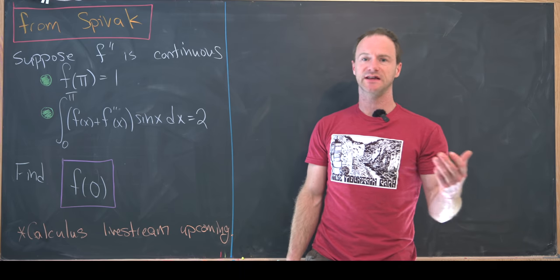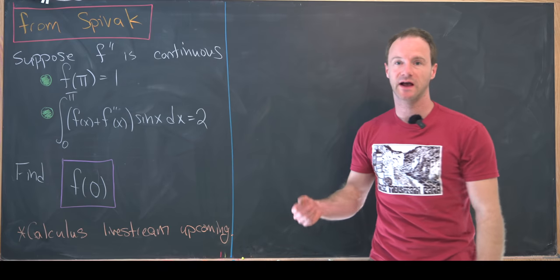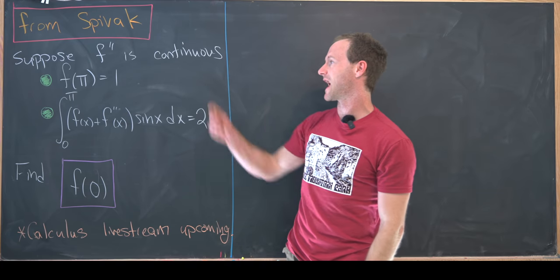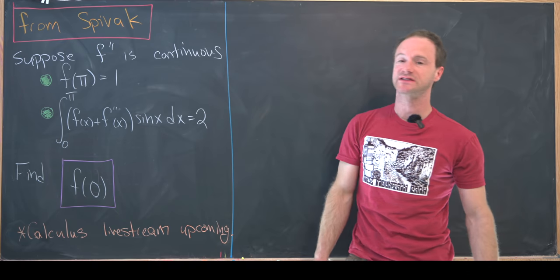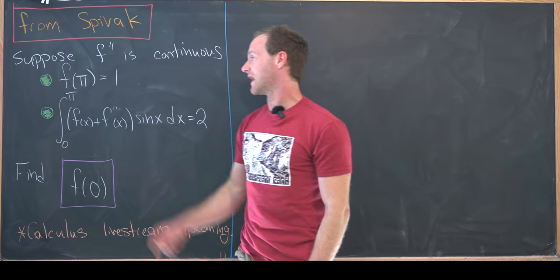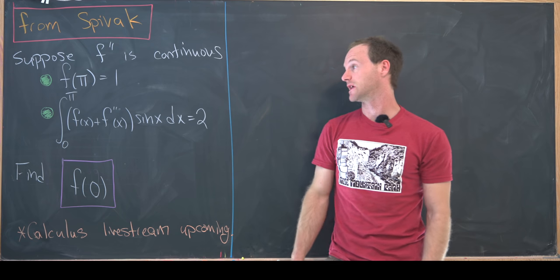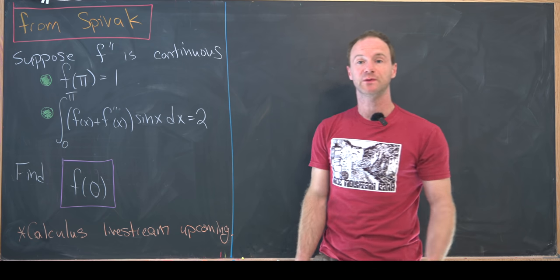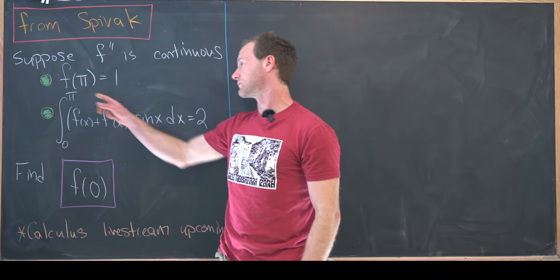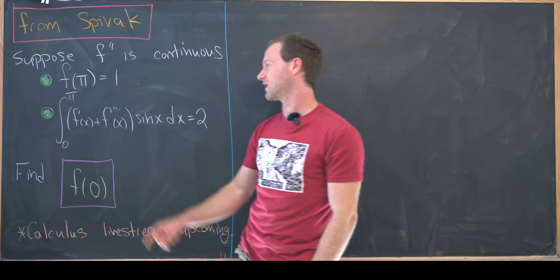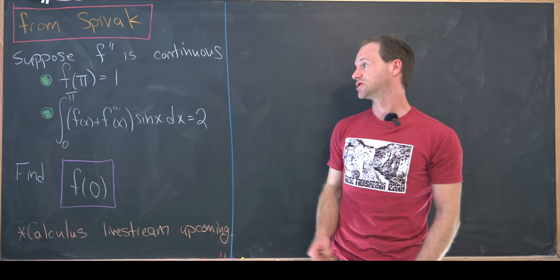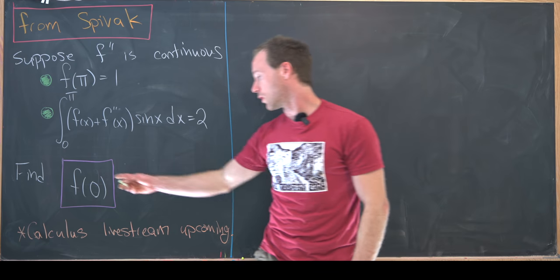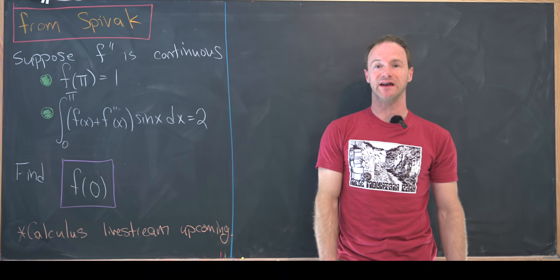The problem today that I've got is from my favorite calculus book written by Spivak. We want to suppose that we have a function so that its second derivative is continuous, and when we evaluate that function at π, we get one. Then when we take the definite integral from zero to π of that function plus its second derivative times sine, we get two. Our goal is to find that function evaluated at zero.